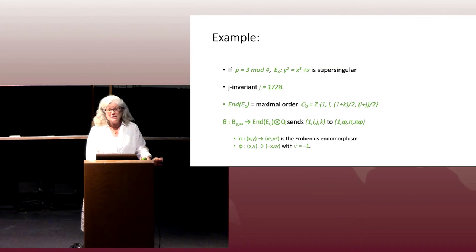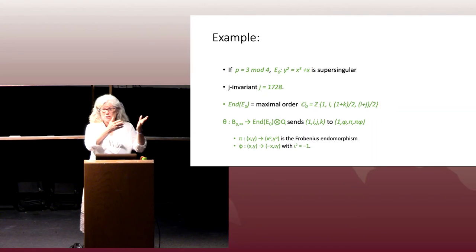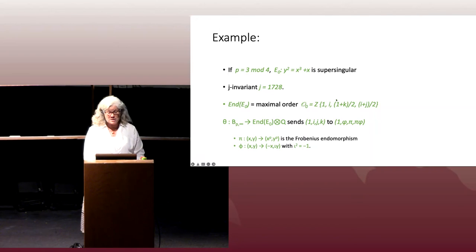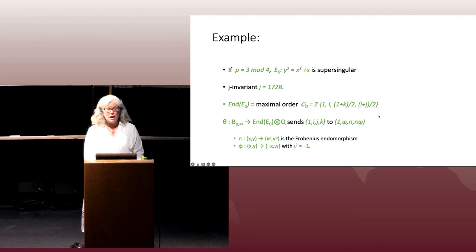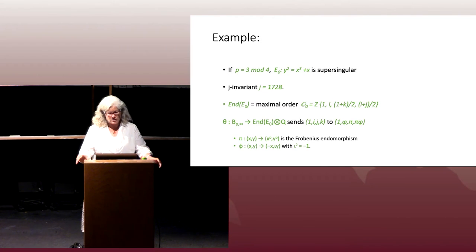For E₀, we have O₀ presented both in terms of its quaternionic basis — with basis elements 1, i, (1+k)/2, (i+j)/2 — and in terms of explicit endomorphisms acting on points on the curve. This makes E₀ particularly useful for the attacks I'm about to explain.